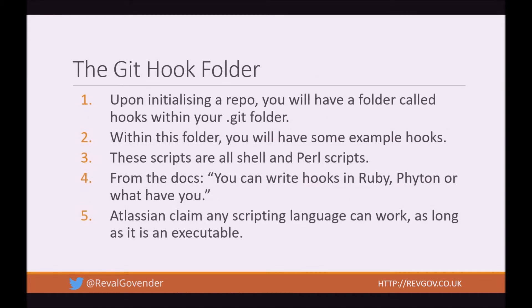Upon initializing a repo, you will have a folder called hooks within your Git folder. Within this folder, you will have some example hooks. These scripts are shell and Perl scripts directly from the Git docs. You can write hooks in Ruby, Python, or what have you. According to Atlassian, any scripting language can work as long as it is an executable file.